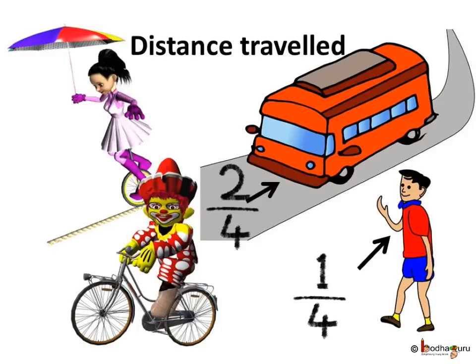One day Aman went to watch a circus show. Aman travelled a distance of 2 by 4 km by bus and then 1 by 4 km on foot. How much distance did Aman travel for the show?